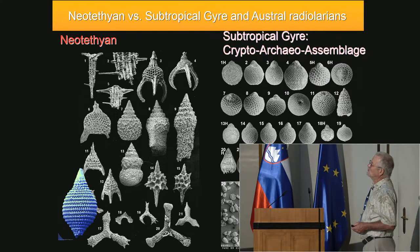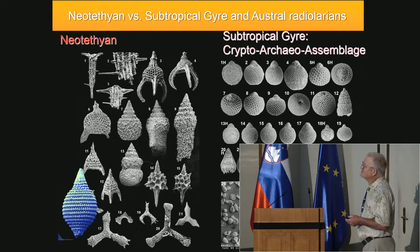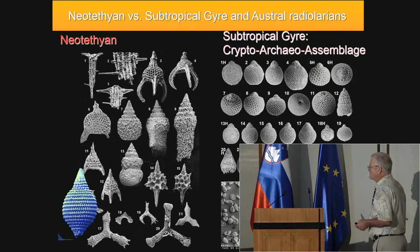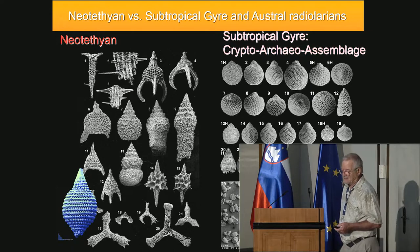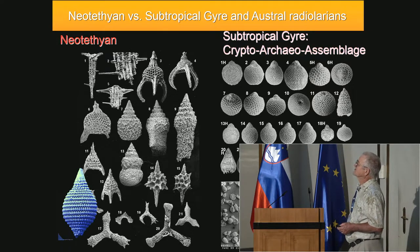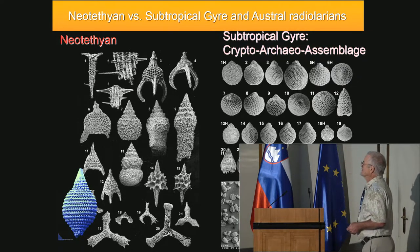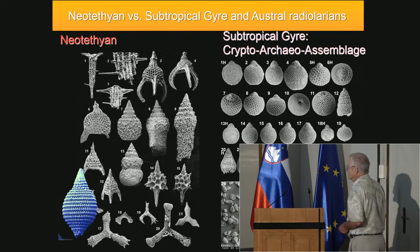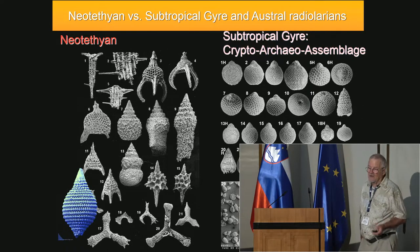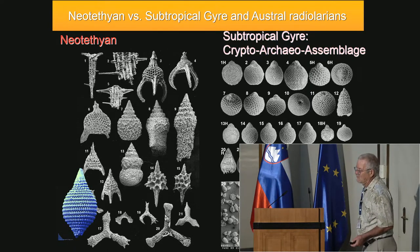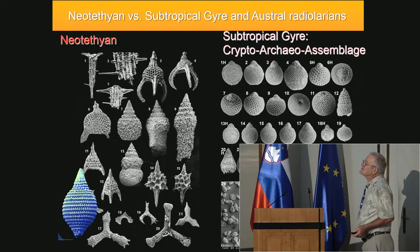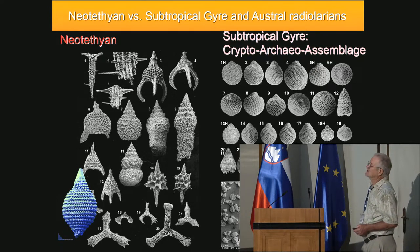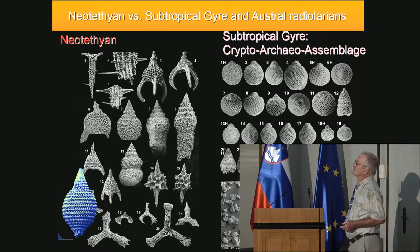That would be a short characterization of this crypto-archaeal assemblage, which I would place back into subtropical gyres. These species are probably tolerant to low fertility, or they are more or less specialized. That is the thing we don't know.